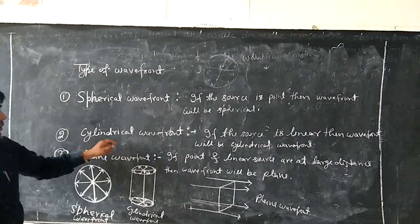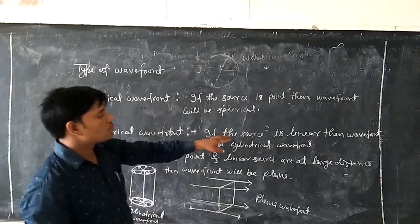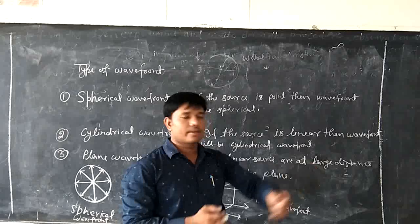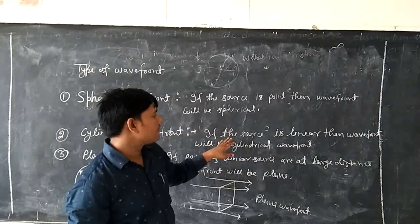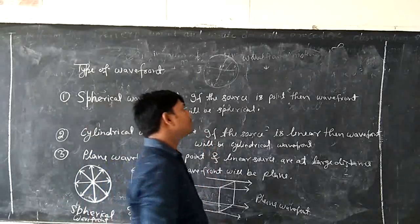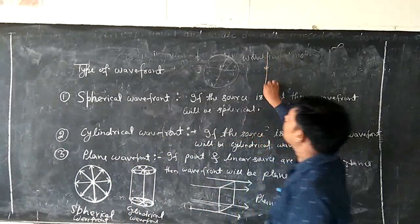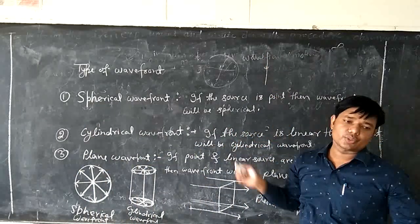And second is cylindrical wavefront. If the source is linear, linear means a cylinder, as a simple cylinder. This is called a linear source.